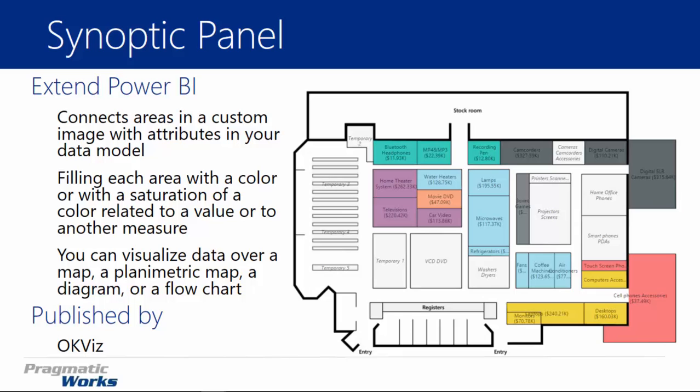You take an image, upload it to the Synoptic Panel Designer website, which is run by the folks at OKViz. Once you do that, you can outline the different areas of your image. It'll allow you to download an SVG file, which is kind of a mapping file, and you can use that inside of Power BI and tie it to your data. Big kudos to the guys at OKViz — they also run SQLBI.com and have done a great job with this.